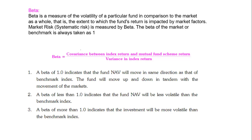The beta of the market is always 1. Beta is equal to covariance between the index return and mutual fund scheme return, divided by variance in index return.